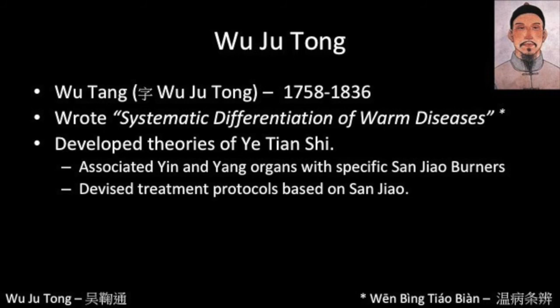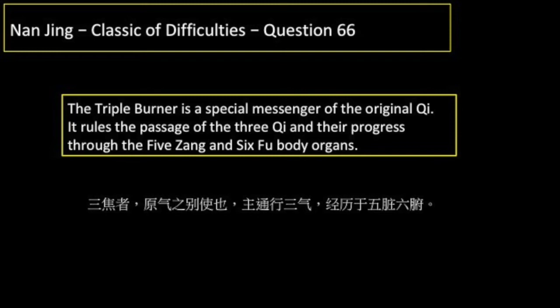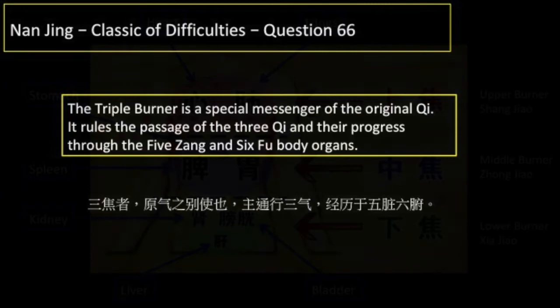In his work, he associated the organs with each of the three burners or three warmers. The function of the Sanjiao or triple burner is cryptically referred to in the 66th difficulty of the Nanjing Classic, which states: the Sanjiao is the special messenger of the original Qi; it rules the passage of the three Qi and their progression through the five Zang and six Fu body organs.